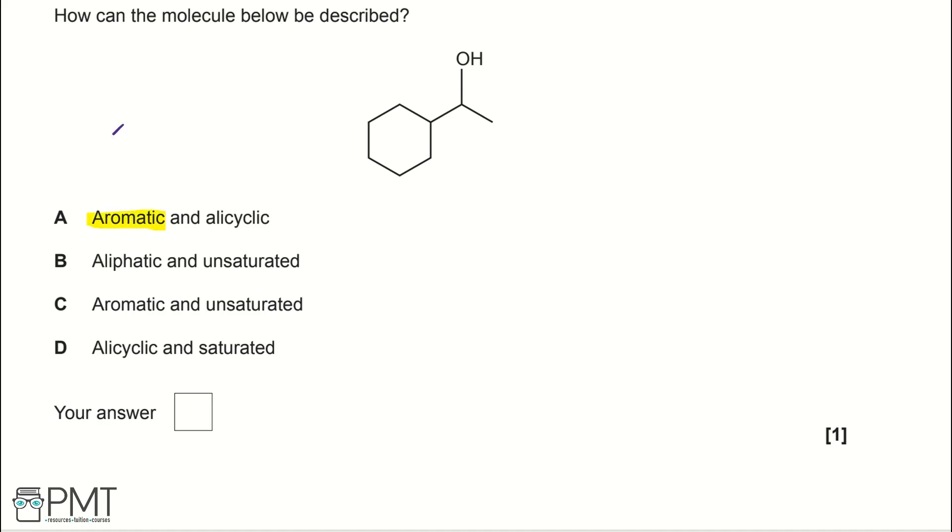Starting with aromatic: an aromatic compound has a benzene ring. This molecule does not have a benzene ring, so it can't be A. But in the second part of A, we're told it's acyclic. This molecule is actually cyclic because it's got a cyclic structure, which I've just circled.